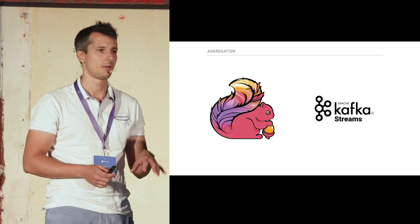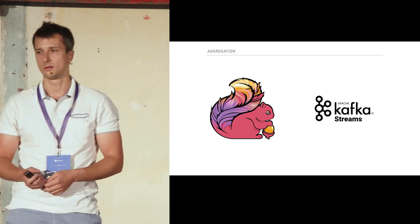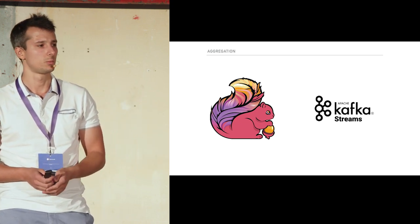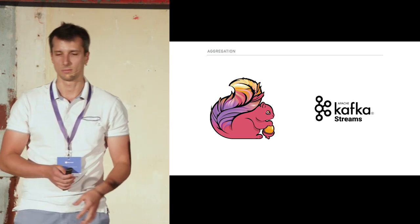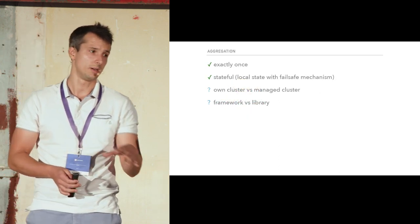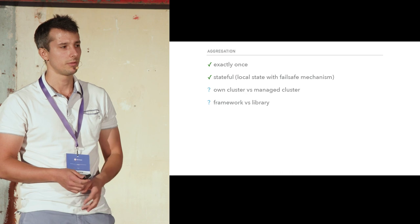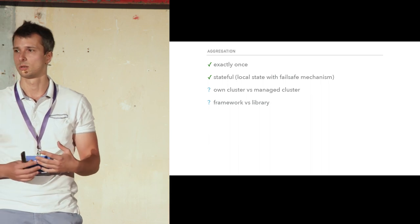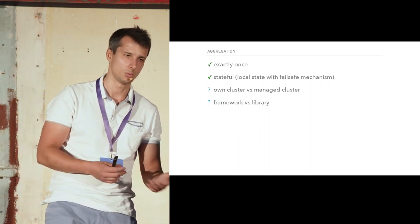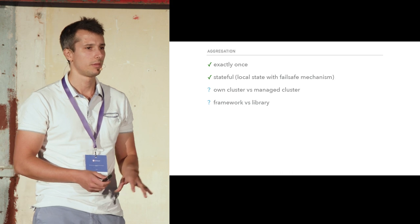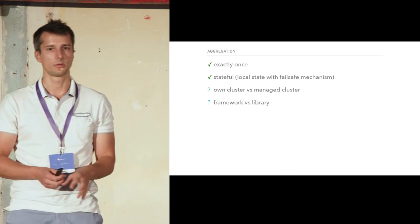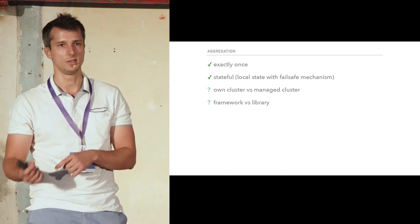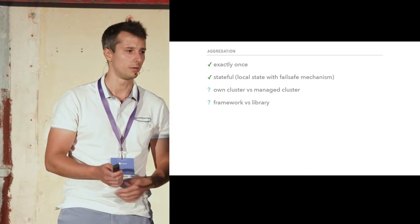We asked around at New Relic to understand what other teams were doing, because this wasn't the first time we'd tried to solve this problem. The two answers we got were Apache Flink and Kafka Streams, both already used by some teams. Both systems provide exactly-once semantics, meaning your message is guaranteed to be processed once and only once. Both provide stateful local storage with a fail-safe mechanism — if your worker dies, the storage is guaranteed to be restored somewhere else.